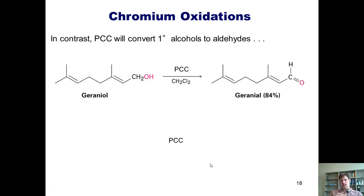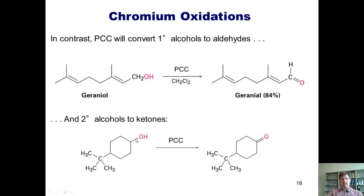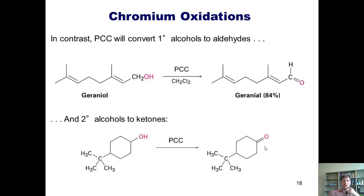You might wonder how to get an aldehyde. If you start with a primary alcohol and treat it with PCC, which is a milder oxidizing reagent, you can go up to an aldehyde and stop. PCC only goes up one net bond to oxygen and stops. Secondary alcohols only have a single hydrogen, so when you oxidize them with PCC, you go up one net bond to oxygen to form a ketone. A secondary alcohol treated with PCC gives a ketone — just like the chromic acid oxidation also gives a ketone from a secondary alcohol.